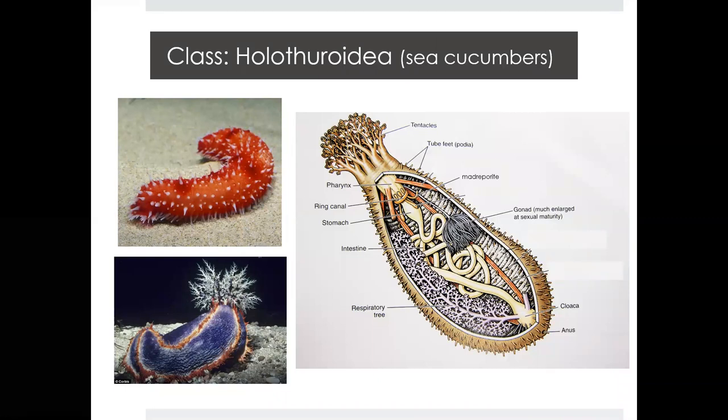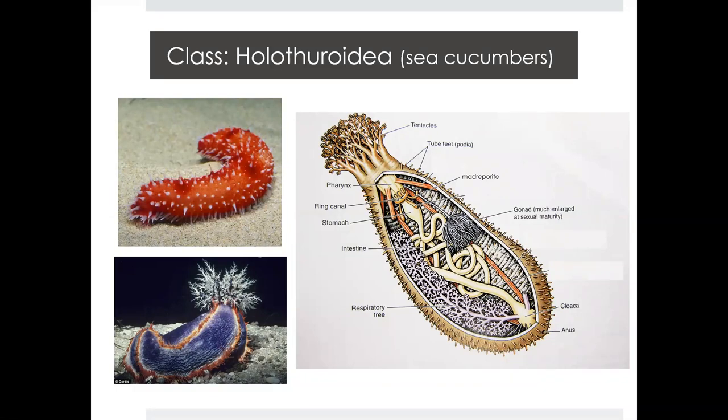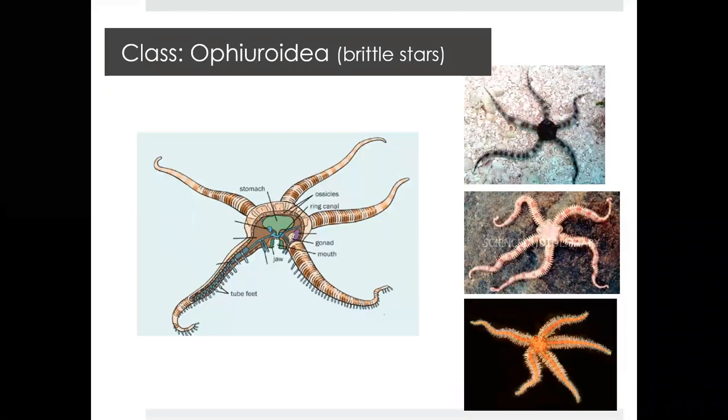Moving on with Echinodermata, the next class is Holothuroidea, which are sea cucumbers. With this class, we really don't need to go into much detail about internal structure — rather just recognizing what these organisms are and what class they fall within. As the common name implies, sea cucumbers kind of look like cucumbers. They come in all different sizes and are found on the ocean floor. Some exhibit tentacles, whereas others just look like cucumbers on the bottom of the ocean.